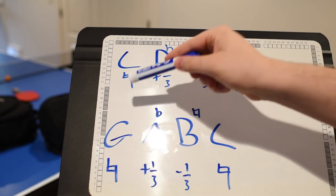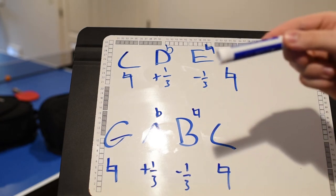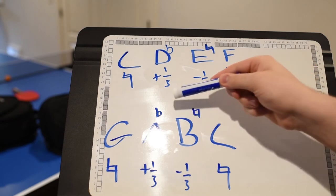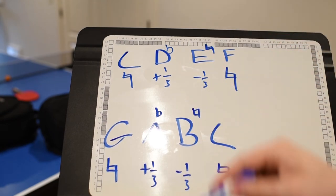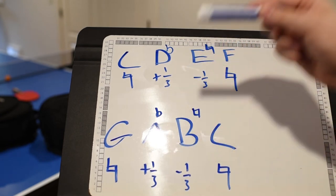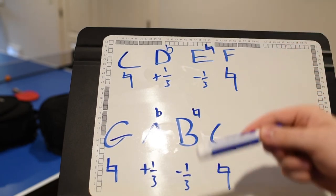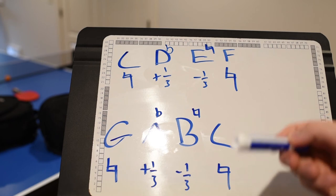C, D flat becomes a third sharp. E natural minus a third. One more time: C, D flat plus a third, E natural minus a third, F.